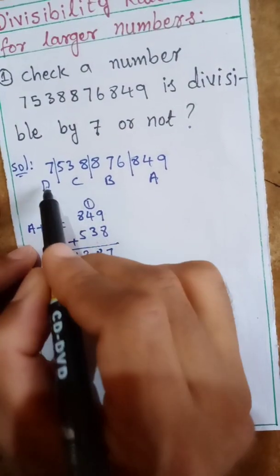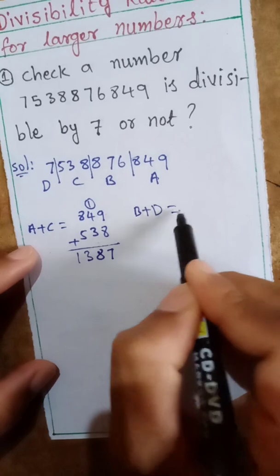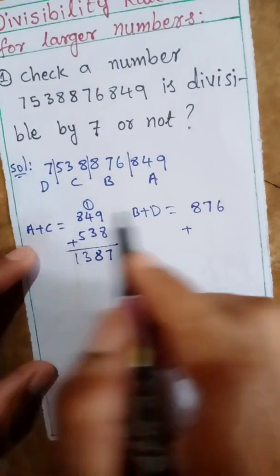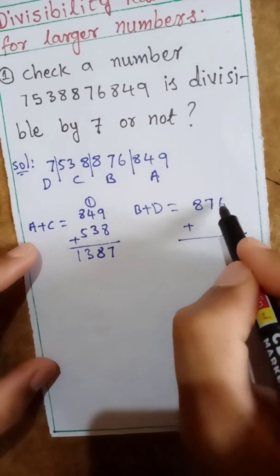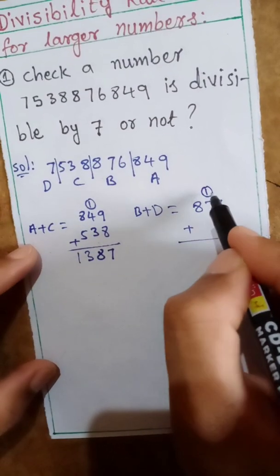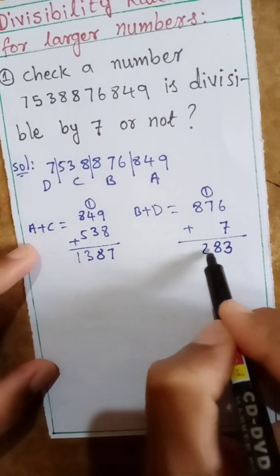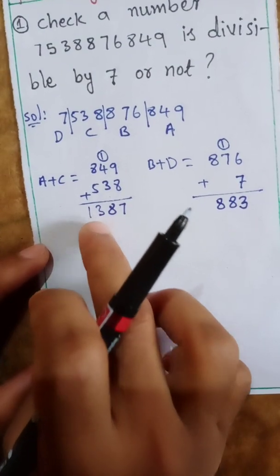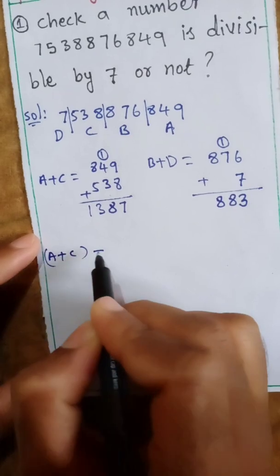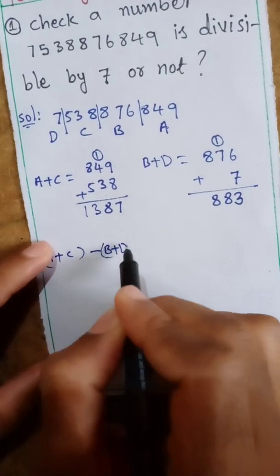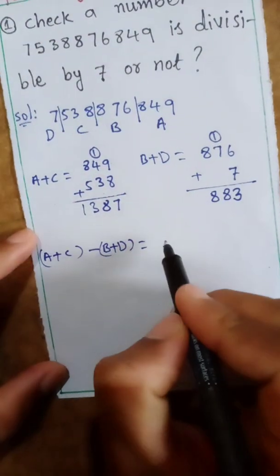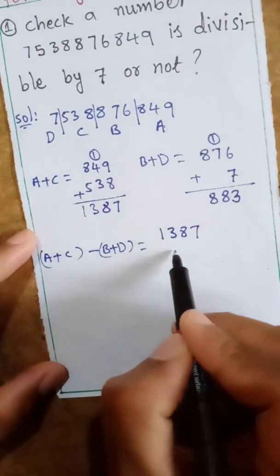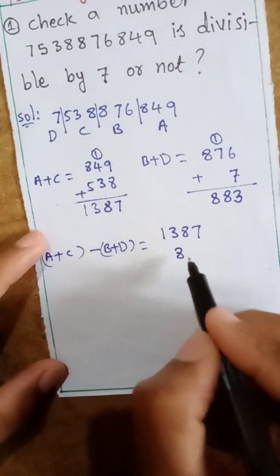Now take B plus D. B equals 876. D equals 7. Adding: 6 plus 7 is 13, carry 1; 1 plus 7 is 8. So B plus D equals 883.